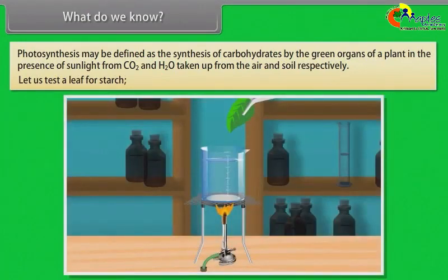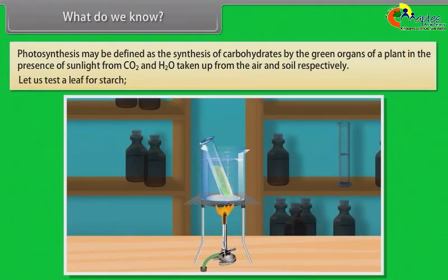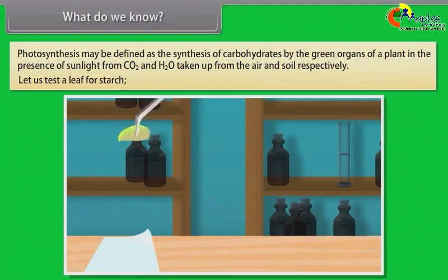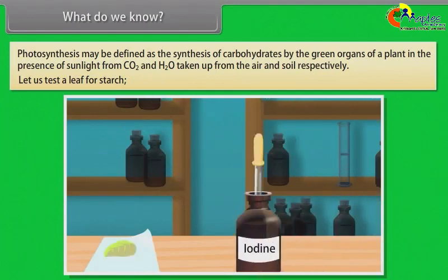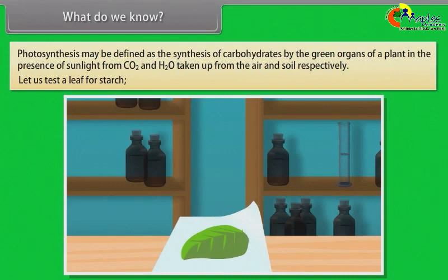Remove a green leaf from a plant. Use forceps to place the leaf in boiling water for 2 minutes. After that, place the boiled leaf in a boiling tube containing 90% ethanol, then place the test tube in hot water until the leaf decolorizes. Remove the leaf, wash it with cold tap water, and spread it on a white surface. Add a few drops of iodine solution on the leaf and it turns dark blue, indicating the presence of starch and proving that photosynthesis occurred.